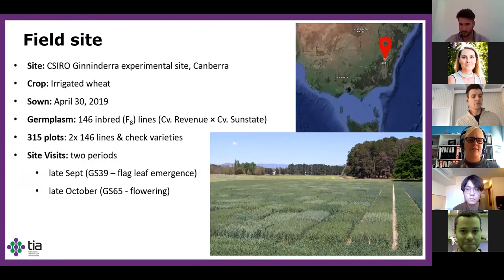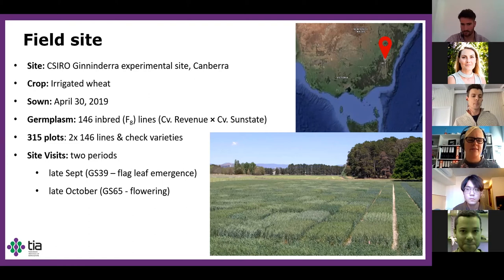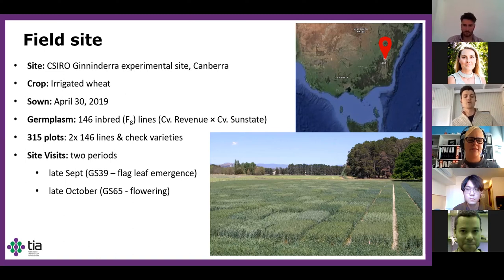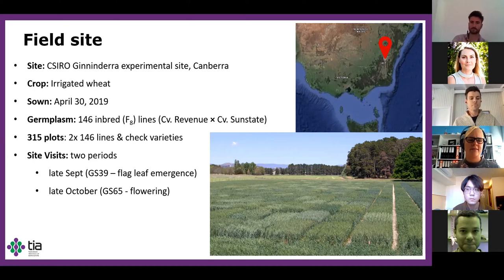I'll first talk about my field site before introducing my research questions, just because the crop was already in the ground before I became involved, and I needed to design my experiment around what was already in place. The crop was located at CSIRO's Gillandera site, just north of Canberra, sown on the 30th of April 2019 for Dr. Richard Richards. There are 146 inbred lines derived from the cross between Revenue and Sunstate, which are thought to be contrasting for canopy architecture, using a randomised complete block design with two reps of each line, including the parent varieties. Seven commercial cultivars were also sown as check plots to act as benchmarks.